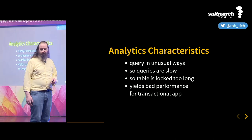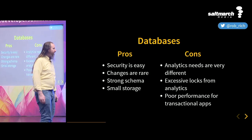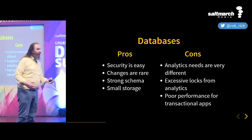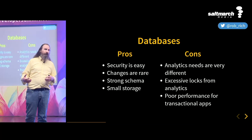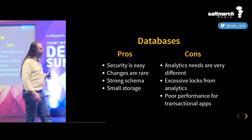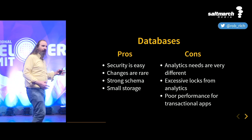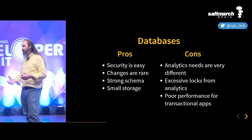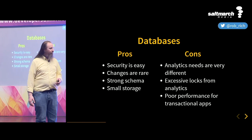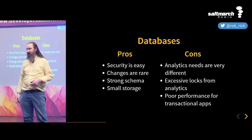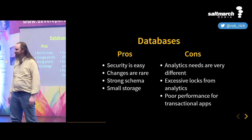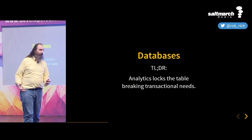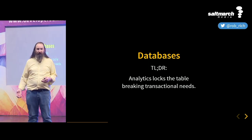Looking at our scorecard for databases again — not looking so great now. We added analytics, and in the transactional system we had a great experience storing data in very normalized, compact ways. But as we start doing analytical things — bulk reading, not changing data — we end up locking out our system. Transactional users are going, 'Hey, can you quit it with that report thing? I want to get some work done.' Databases: we have one database trying to do both transactional and analytical things, and our analytics is breaking our transactions.